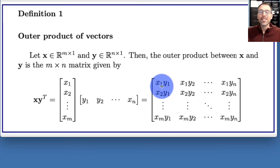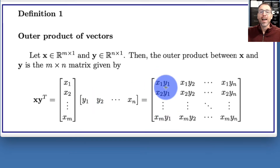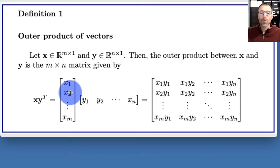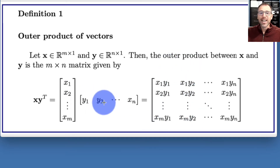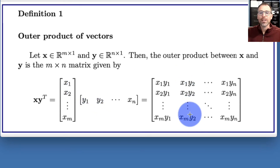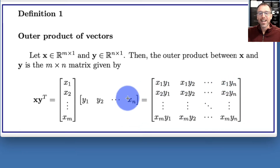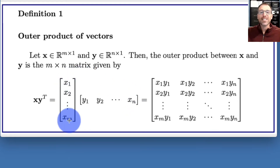The way we form this matrix is to take the first entry of y and multiply it by the entire vector x, putting that product in the first column of the output. So y1 times x1, y1 times x2, all the way down to y1 times xm. To get the second column, we take the second entry of y and do the same — the entire vector x multiplied by y2. Then we go all the way down to the last column, which should read yn (not xn — that was a copy and paste error). We take yn multiplied by the entire vector x and put that in the nth column.